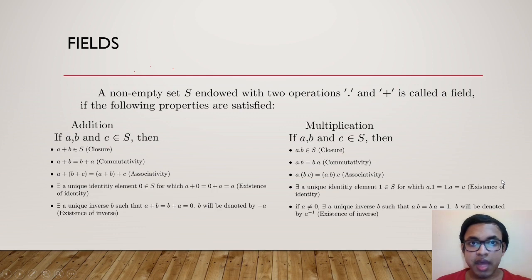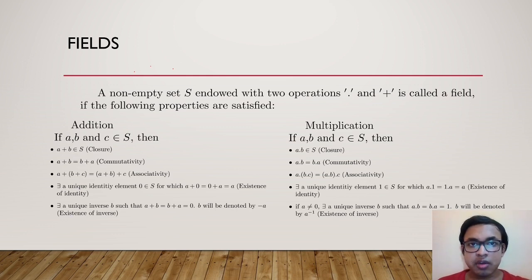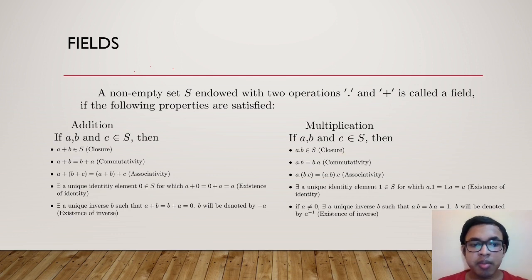Next is the existence of an additive identity: there is an element 0 in S for which a plus 0 and 0 plus a are both equal to a. Then we have a multiplicative identity called 1, which satisfies a times 1 equals 1 times a equals a. We also have the existence of inverses. For every element a in S there exists a unique additive inverse b such that a plus b equals b plus a equals 0, denoted minus a.